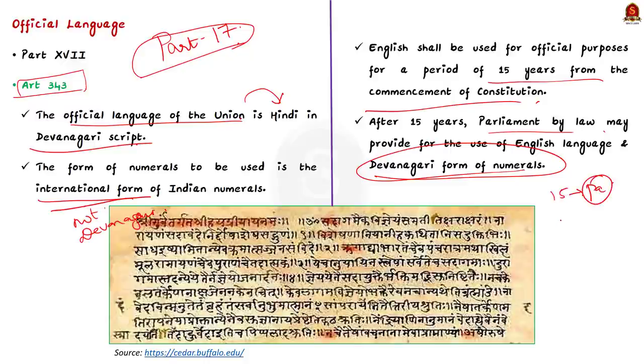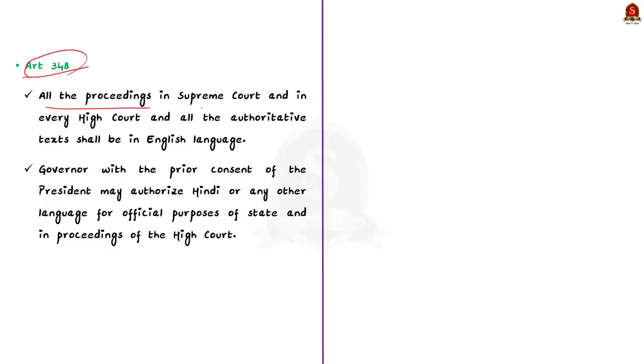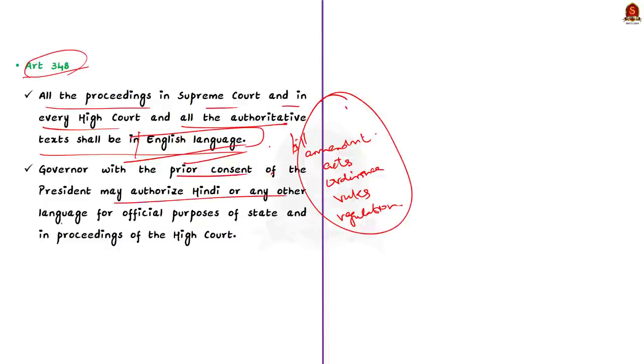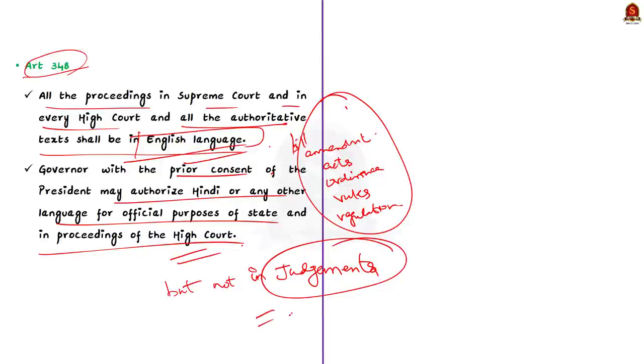See, you should know that the idea behind using English for the official purpose is that it was used in all means before independence and the sudden shift to Hindi should not overwhelm the administration. So, the constitution makers preferred gradual change. That is why 15 years time was given. Now, let's see about article 348. It says that all the proceedings in the supreme court and in every high court and all authoritative text shall be in English language. The authoritative text includes bills, amendments, laws, acts made by the parliament or legislatures and the ordinance promulgated by president or governor, rules, regulation and bylaws etc. It also says that governor with the prior consent of the president may authorize Hindi or other language for the official purpose of state and in the proceedings of the high courts. But this shall not in any case apply to the judgments, orders or decree passed or made by such high courts. So, with this, we have come to the end of this article discussion.